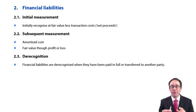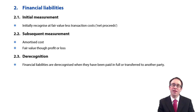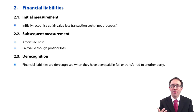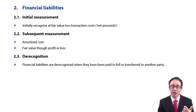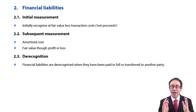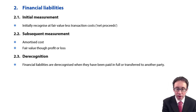With financial liabilities, the main focus at this level is looking at when we issue debt. When we issue debt, we're going to debit the bank and credit our financial liability. We'll need to look at what happens initially, what happens subsequently, and then what happens when it is de-recognised. So initially, when we make that entry to the debit of the bank and the credit to the financial liability.